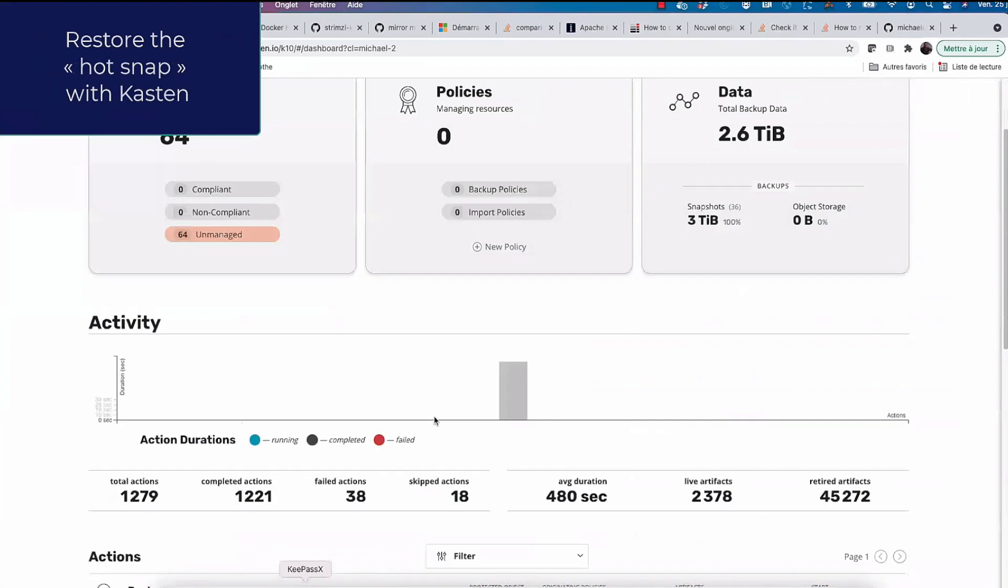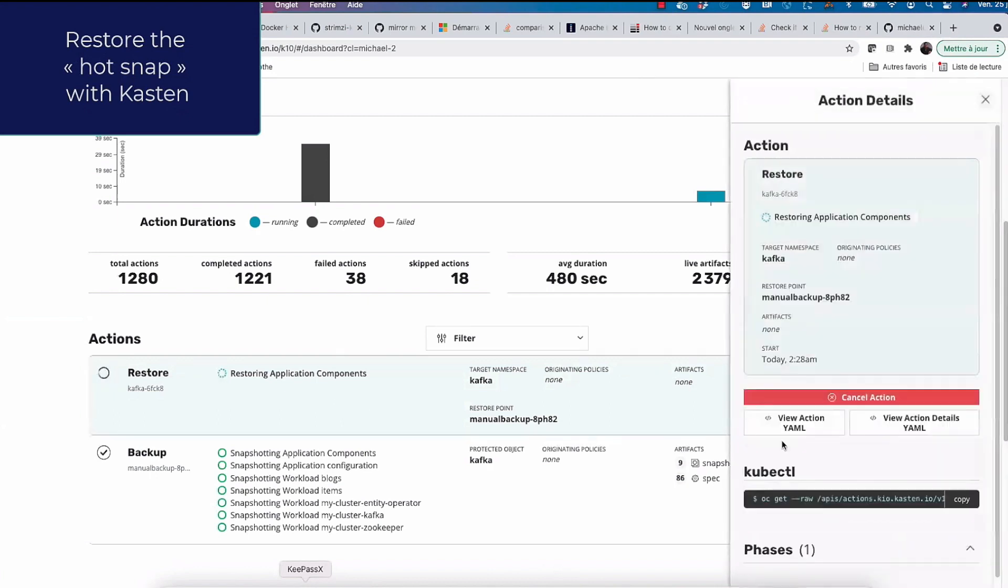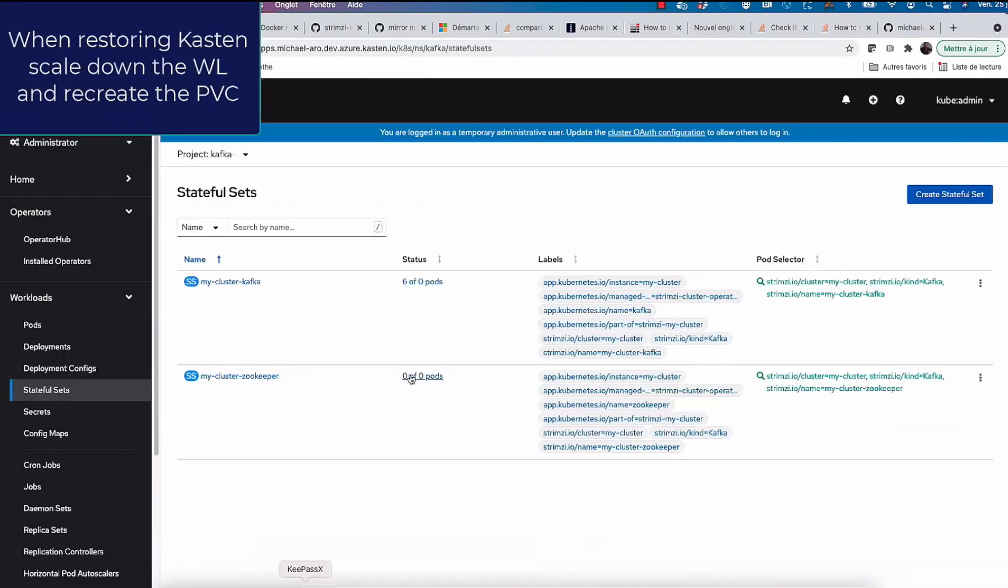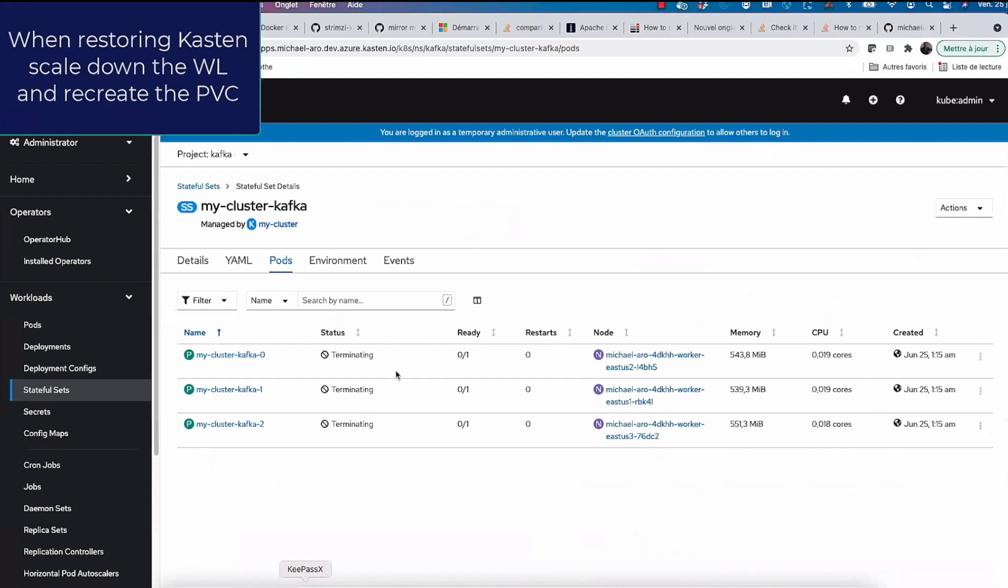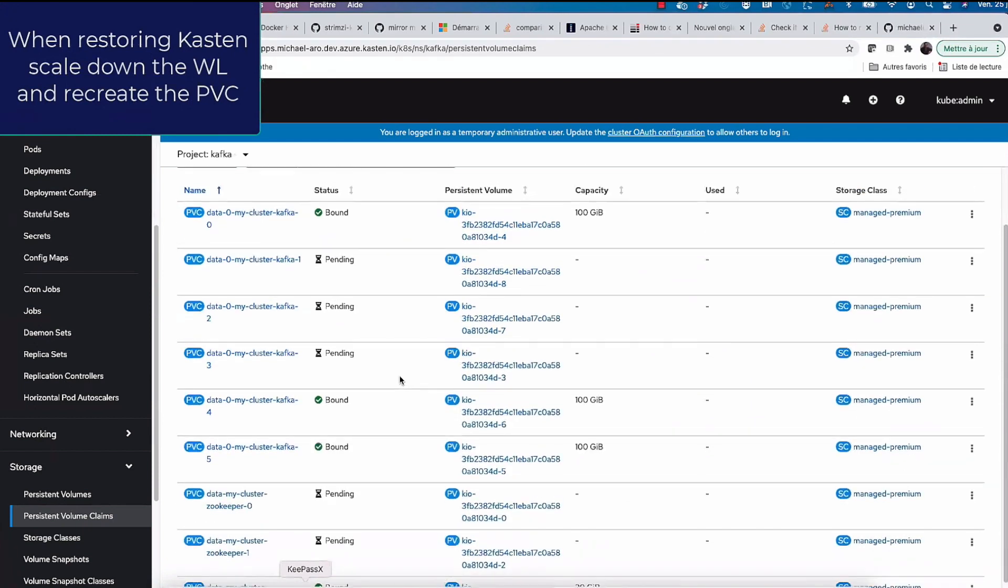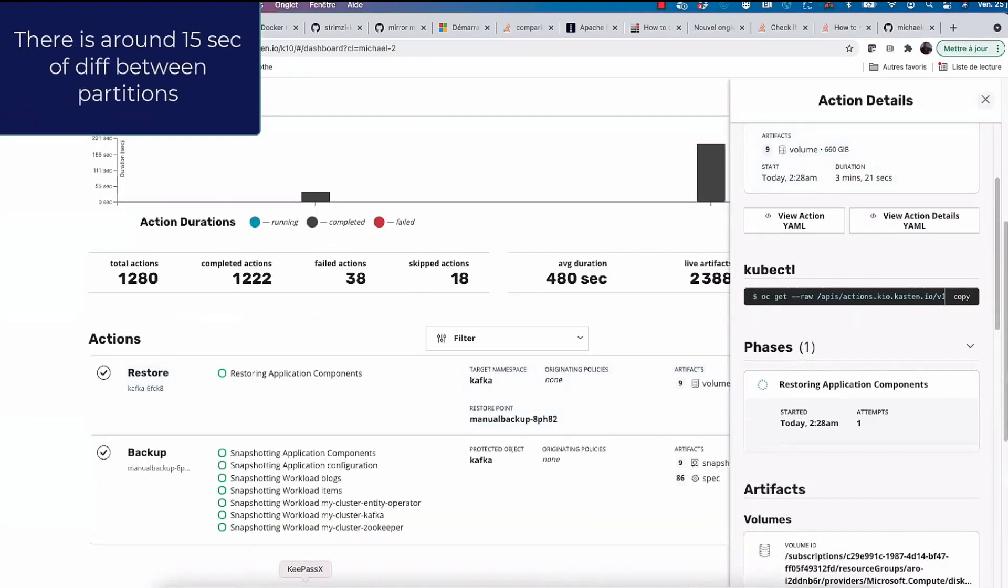So that's going to restore my Kafka cluster as it was. The restore is going to start and the restore is starting. So when the restore starts, Kasten is making sure that first all your workloads are stopped. So you see all the brokers are stopping and we are recreating all the PVCs. We recreate all the PVCs. And when all the PVCs are recreated, then we restart the workload. So workloads have some difficulties to restart, as you can see. Obviously, the hot snapshots, they don't like that that much. But okay, at the end, it managed to reconcile and the restore is finished.